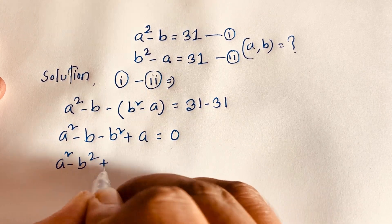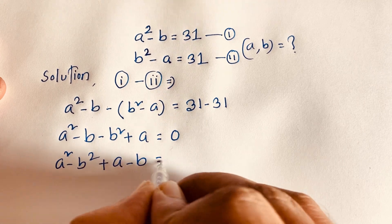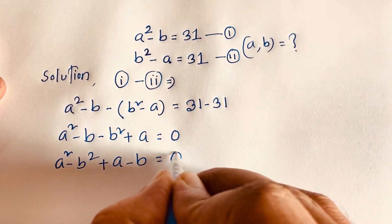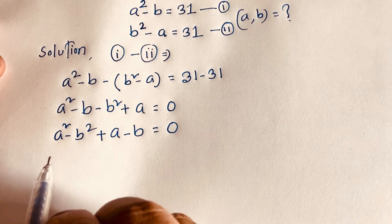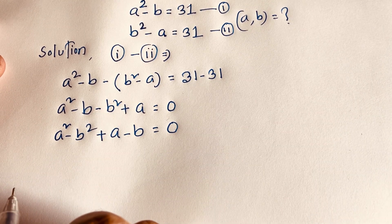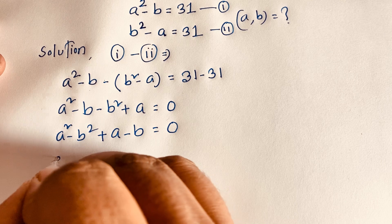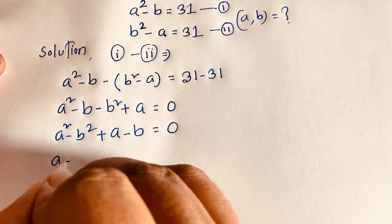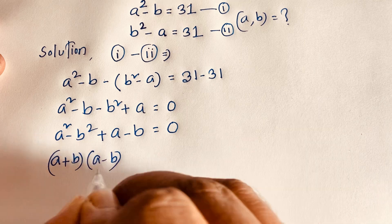We have A squared minus V squared, plus A minus V, is equal to 0. Note that A squared minus V squared can be factored as A plus V times A minus V. According to this identity, it will be A plus V times A minus V, plus A minus V, equals 0.